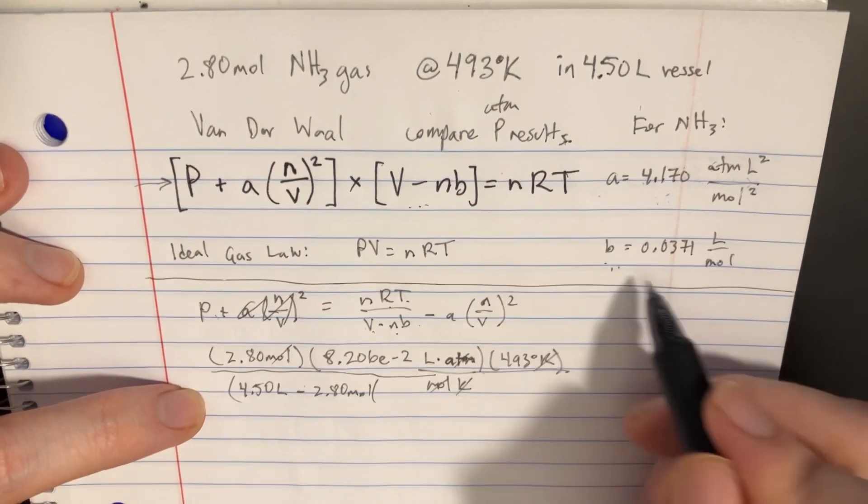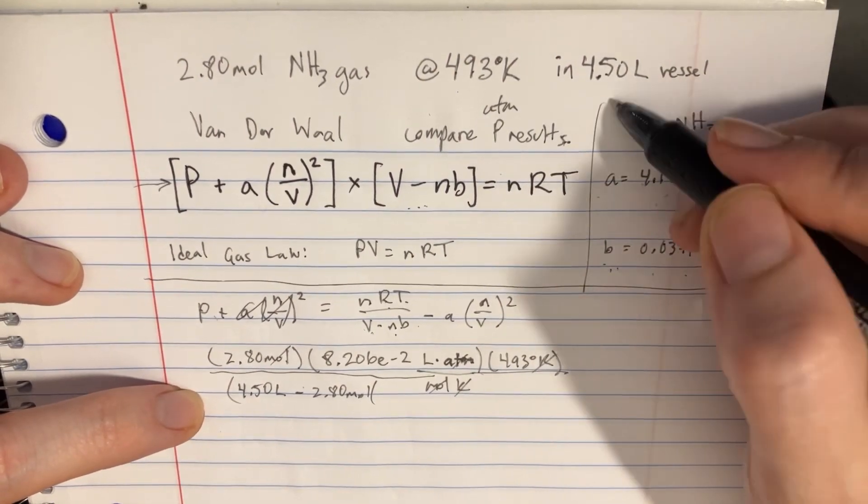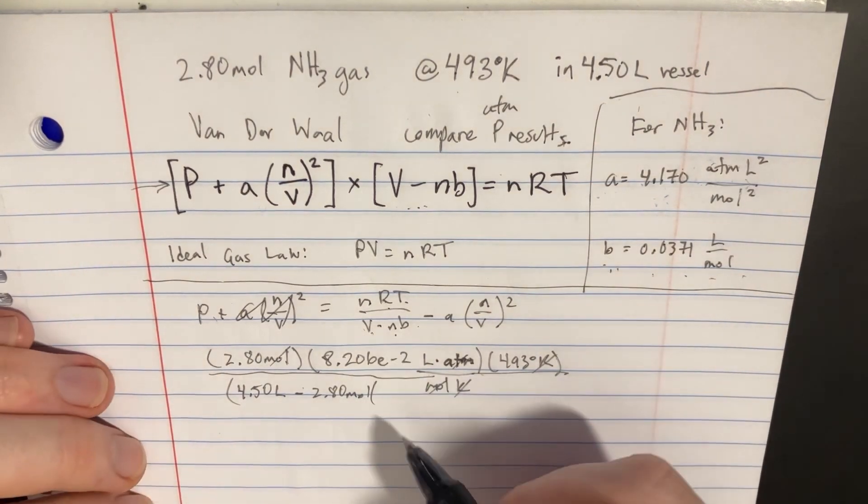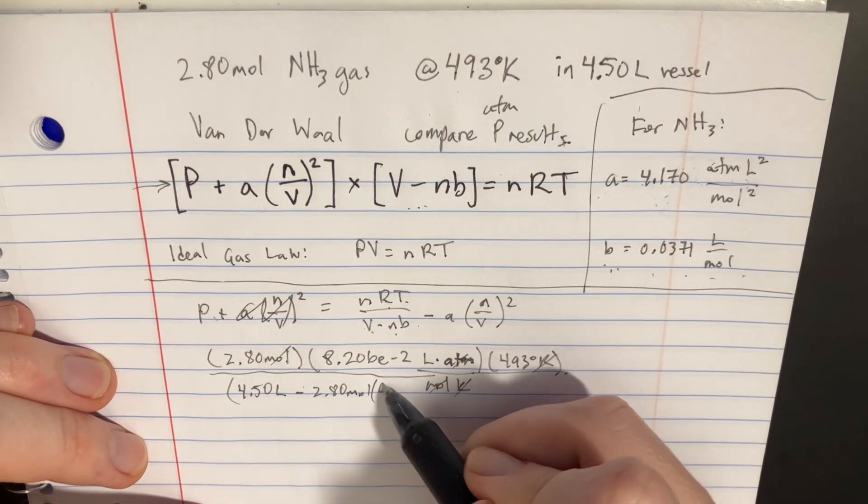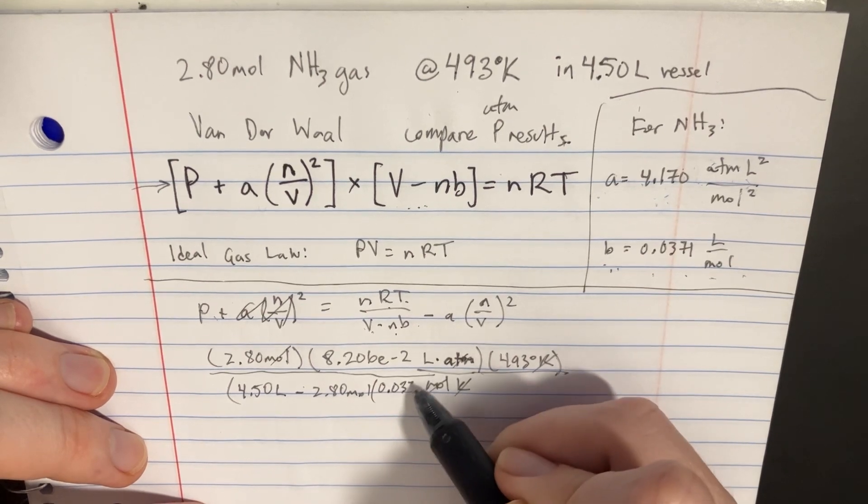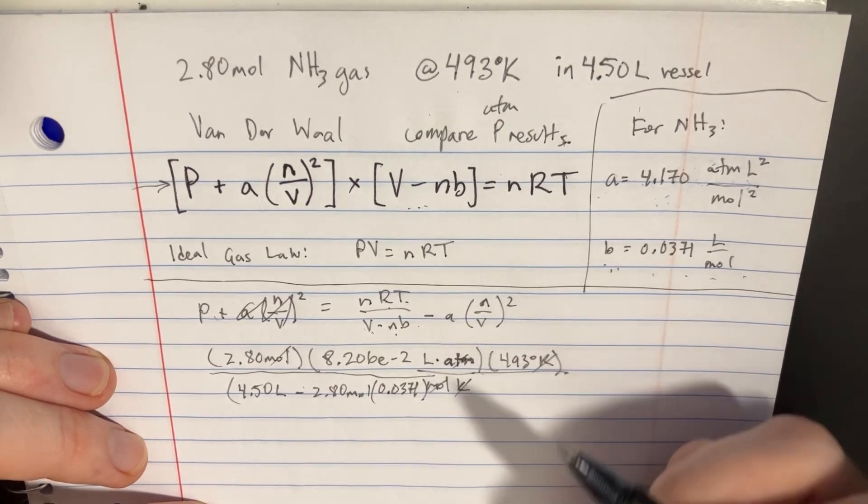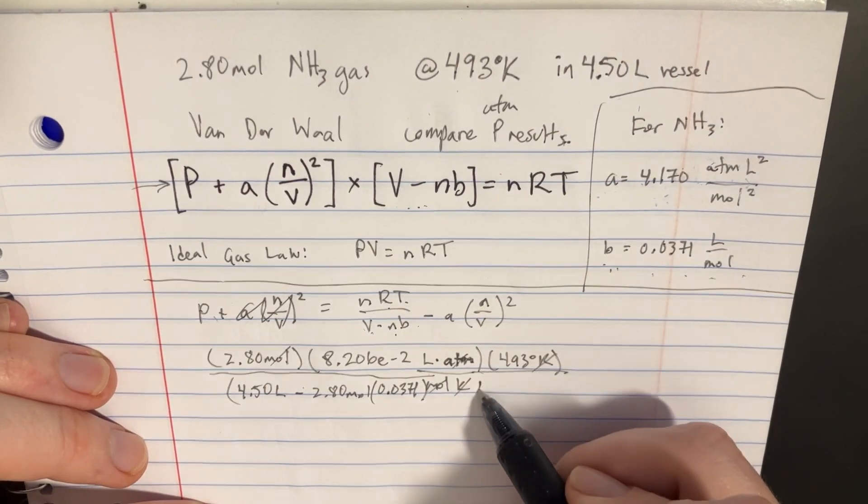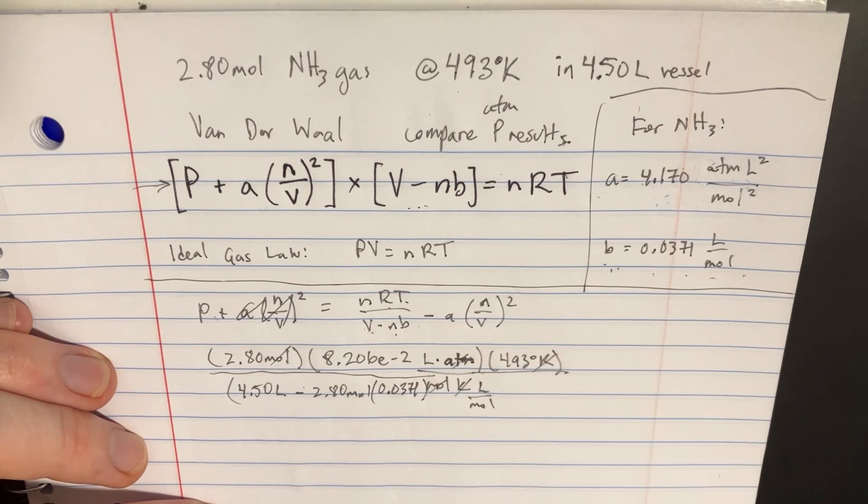And then here we have a B. Well, B is this. Now this was actually just something we found in a table, so it's not something we can really calculate. It's just basically a given value, so 0.0371. And the liters and moles are going to be in there.